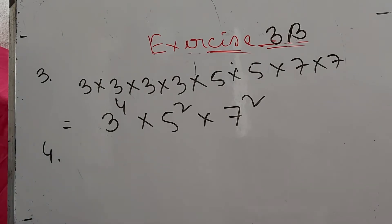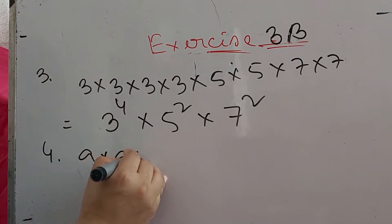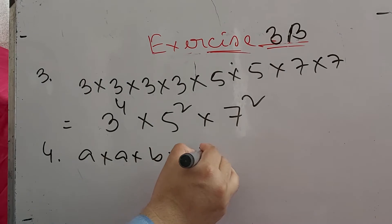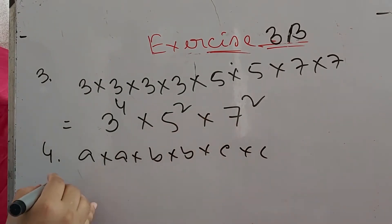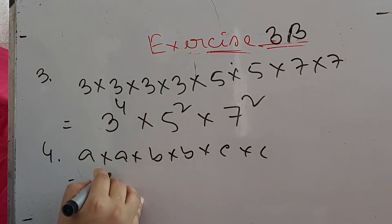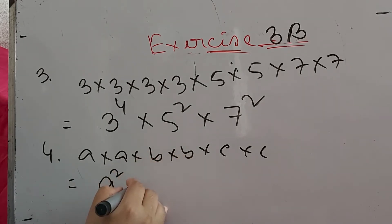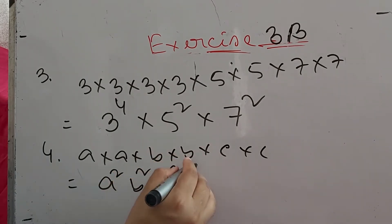Number four: write in index form A into A into B into B into C into C. That is A into A, which means A squared; B into B, that is B squared; C into C, that is C squared.